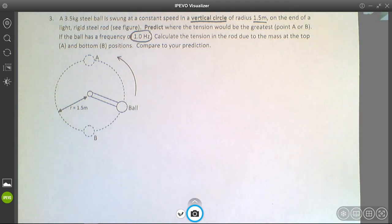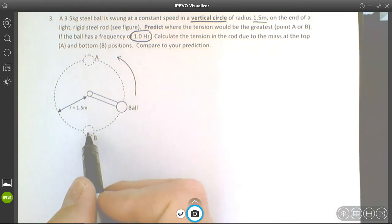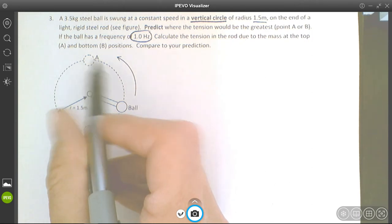The question is, and you can try this - you can get an object like a string, attach an object to it and rotate it around. I just want you to predict: where do you think it's going to feel the heaviest? Is it going to feel the heaviest when it's at the bottom or at the top during its rotation?